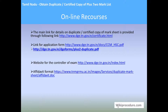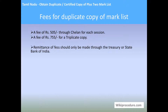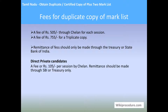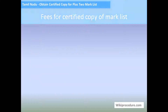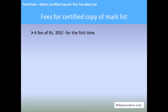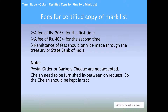Fees: For a duplicate copy of mark list, the fee is rupees 505 through chalan for each session; for a triplicate copy, the fee is rupees 755. Fees should only be remitted through the treasury of State Bank of India. For direct and private candidates, a fee of rupees 105 per session by chalan. Postal orders or banker's checks are not acceptable; chalans must be kept intact. For a certified copy of mark list, the fee is rupees 305 for the first time and rupees 405 for the second time. Remittance should only be made through the treasury of State Bank of India.